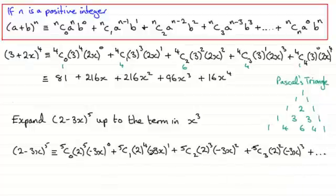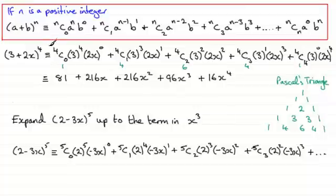Now we've just got to work out each of these terms. You could use your calculator to work out 5C0, 5C1, and so on, or you could use Pascal's Triangle. That previous line was for the power 4, giving values 1, 4, 6, 4, 1. When it's to the power 5, we just need another line.